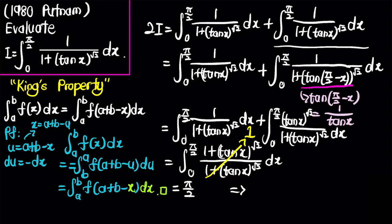Therefore 2I equals π/2, so I equals π/4. Moreover, you can notice that the square root of 2 can be replaced by any real number α, and by using any real number as the exponent you get the same answer of π/4.